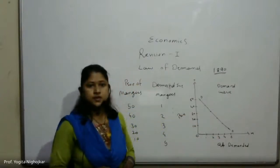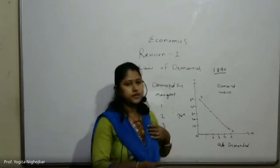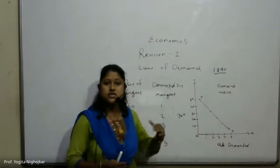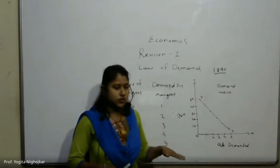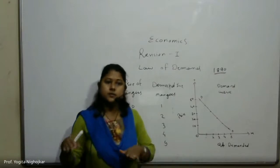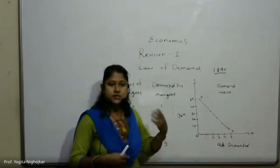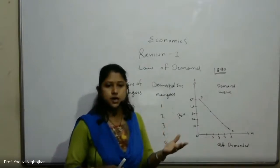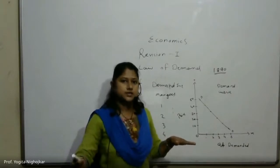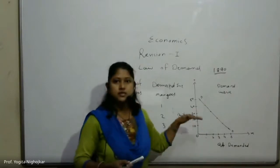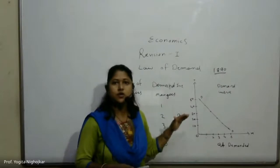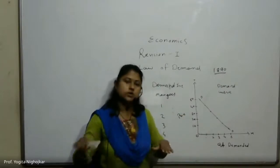Some assumptions are here. First is constant level of income. If the law of demand is to operate, then the consumer's income should remain constant. For example, if income increases, people will demand more quantity of a commodity even at higher prices. So income is assumed constant in the law of demand — if income changes, demand will also change.